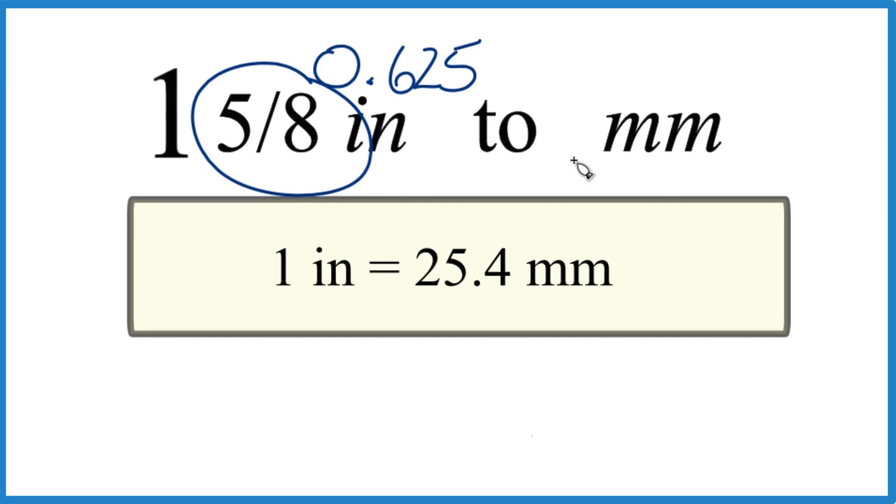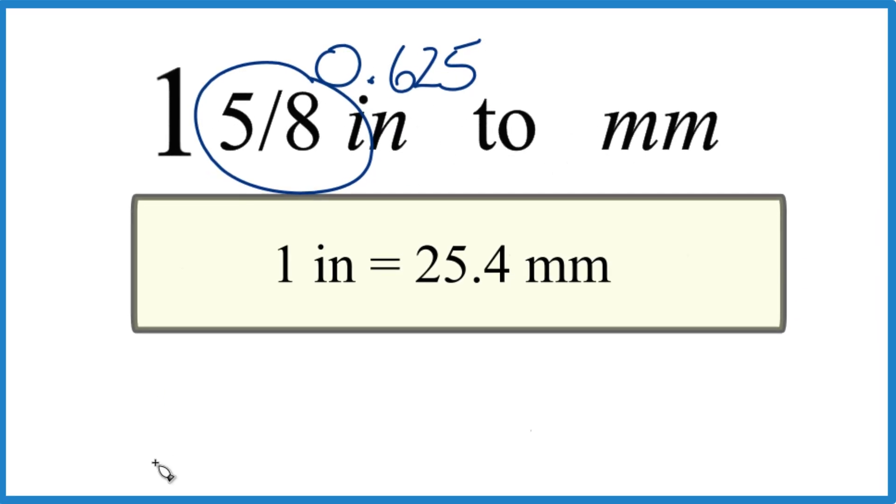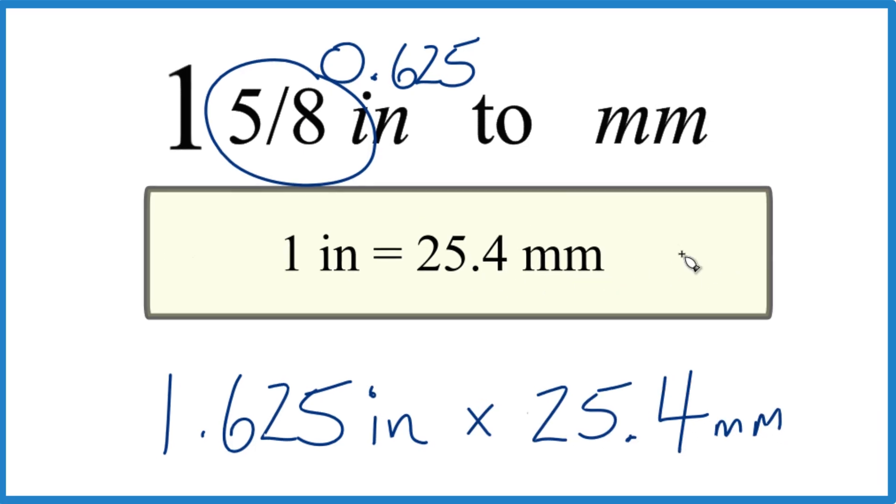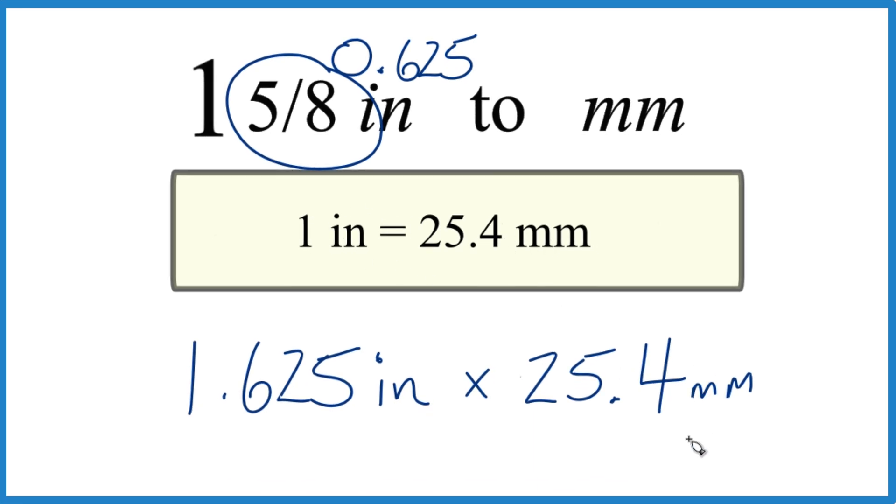So instead of 1 and 5/8 inches, let's say 1.625 inches. Then all we need to do to get from inches to millimeters is multiply by 25.4 millimeters—that's 25.4 millimeters in one inch, so that's the conversion factor.